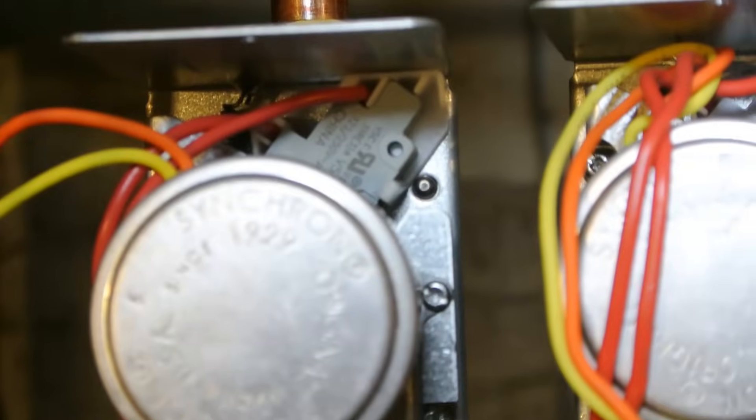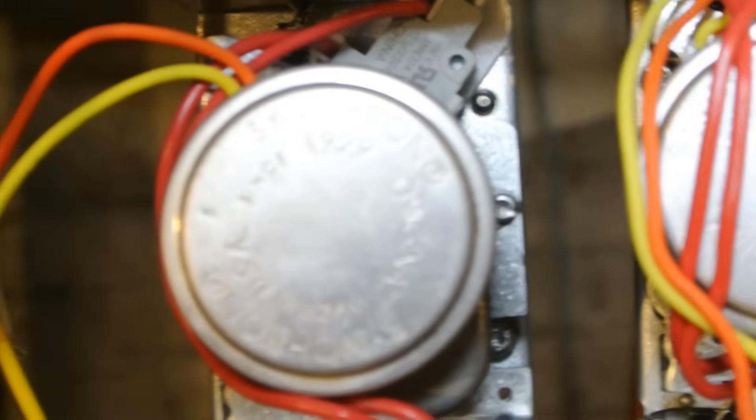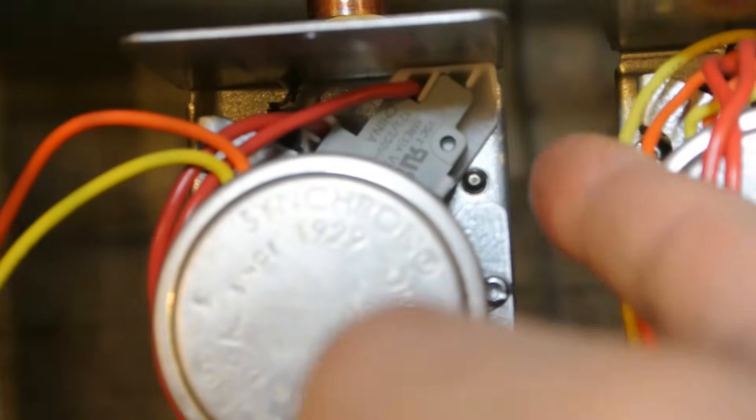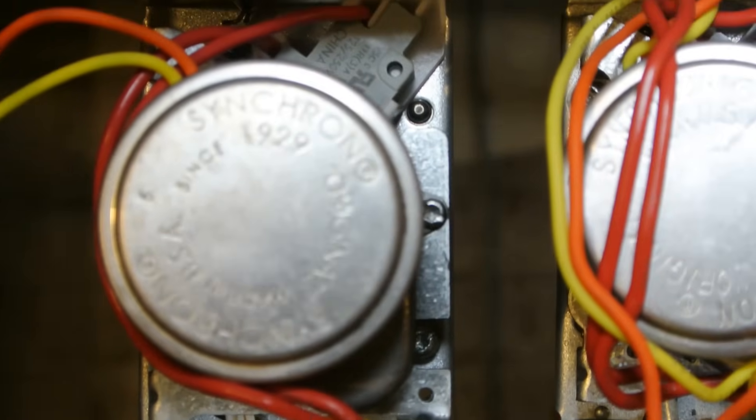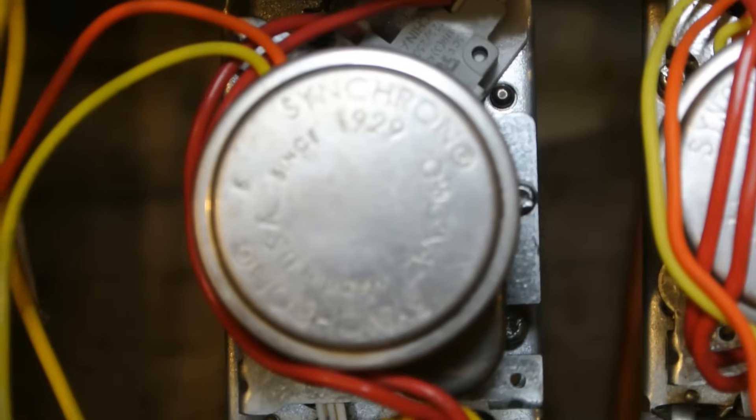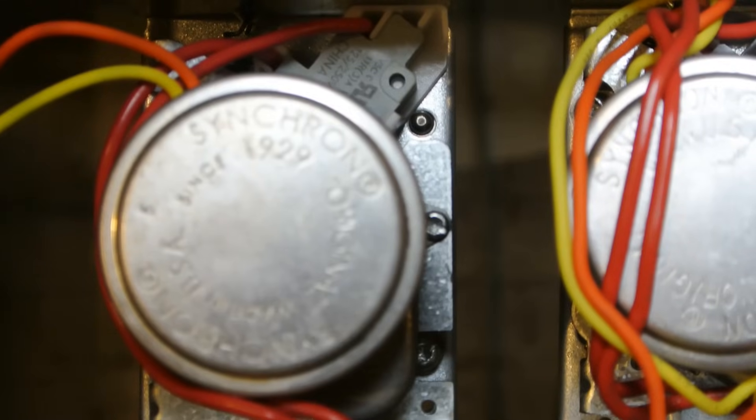So the end switch is up there, right there. This guy right here is the end switch. So when this turns on, it's not reaching all the way and clicking that off. I'm just going to change the motor. It does open the valve itself, but it doesn't have enough power to hold open that switch because it's right at the end. Hence why it's called an end switch.